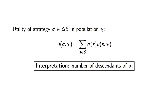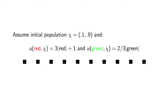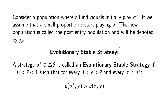We can interpret this utility to be the number of descendants of sigma. For example, if we had an initial population of .1, .9, and utilities where the utility of playing red is three times red plus one, and the utility of playing green is two thirds of green, then over time we'd see that the reds would take over. This leads to another very important idea: whether or not a strategy is evolutionary stable.